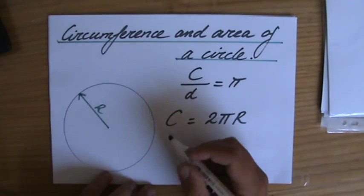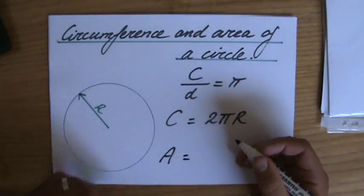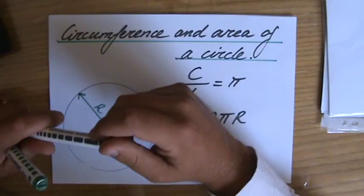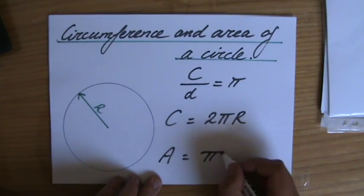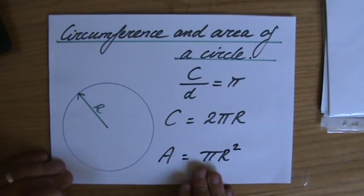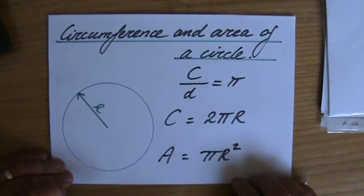The area of a circle equals, well, area is always a centimeter square or a meter square, isn't it? Millimeter square. The formula is pi r squared. Pi times the radius squared. Pi times the radius times the radius.